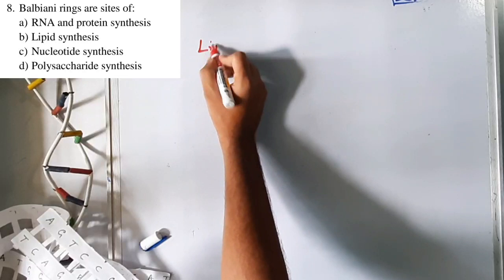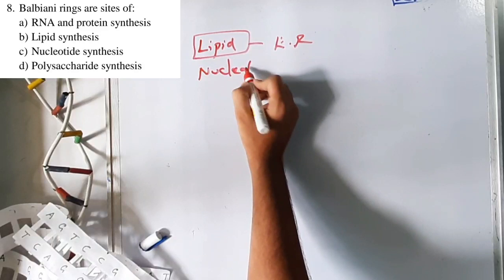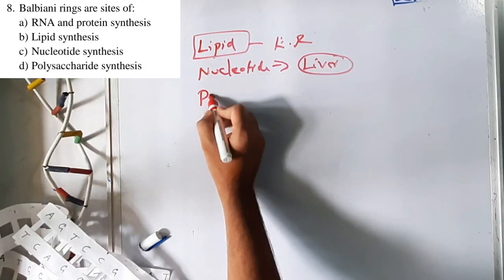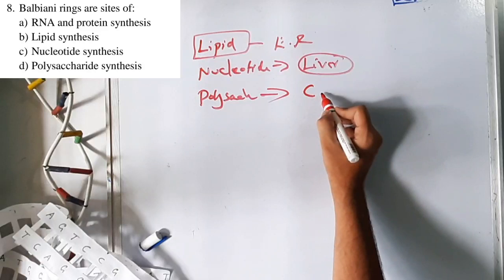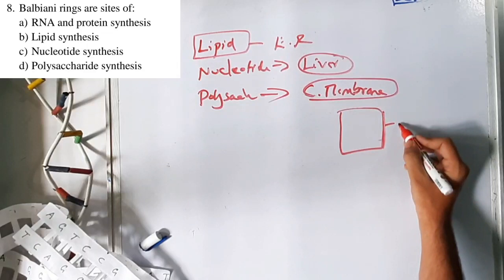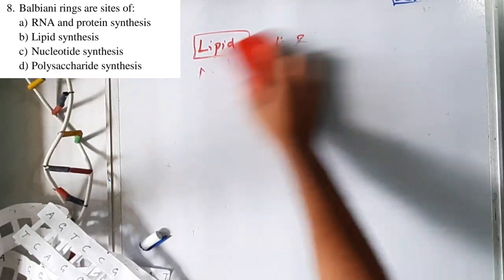Additional points: Lipid synthesis takes place in the endoplasmic reticulum. Nucleotide synthesis takes place in liver cells. Polysaccharides are synthesized at the cell membrane of living organisms — for example, cellulose in plant cell walls is produced from the cell membrane.